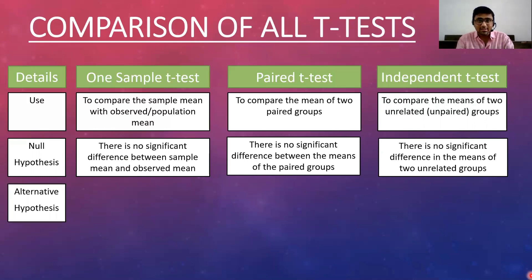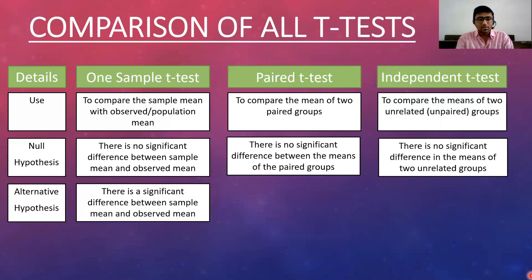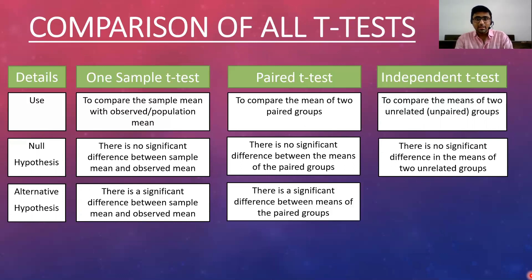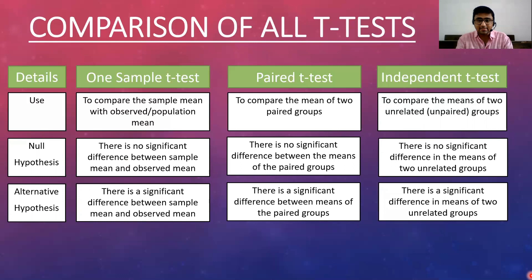The alternative hypothesis for the one sample T-test is that there is a significant difference between the sample mean and the observed mean. For the paired T-test, there is a significant difference between the means of the two paired groups. And for the independent T-test, there is a significant difference in the means of the two unrelated groups.